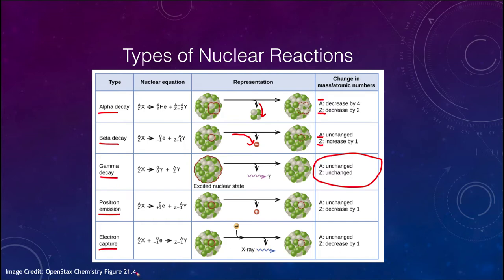We can also emit a positron from the nucleus. If we do that, we are changing a proton into a neutron. An electron comes out to balance the charge — we're losing a positive charge when that positron comes out. This is the opposite of beta decay: the mass remains unchanged, but the atomic number will decrease by one.